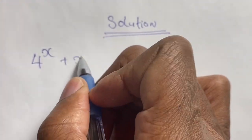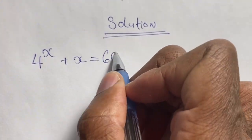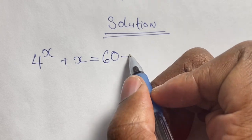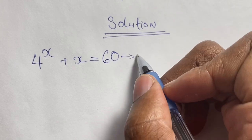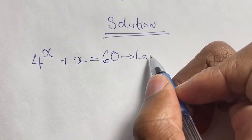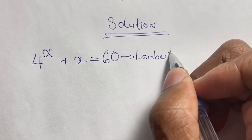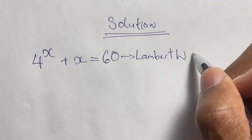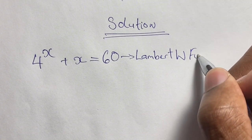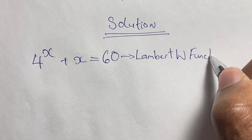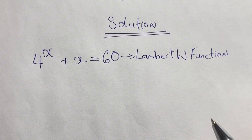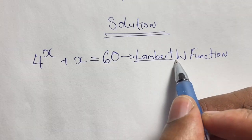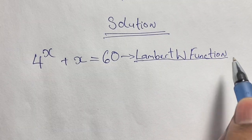Now let us see if we can solve this equation. We have 4 to the power of x plus x is equal to 60. In this equation we're going to use a special type of function called the Lambert W function. This is a very special kind of function where we use this to solve equations where the exponent is in the power and also in the base.